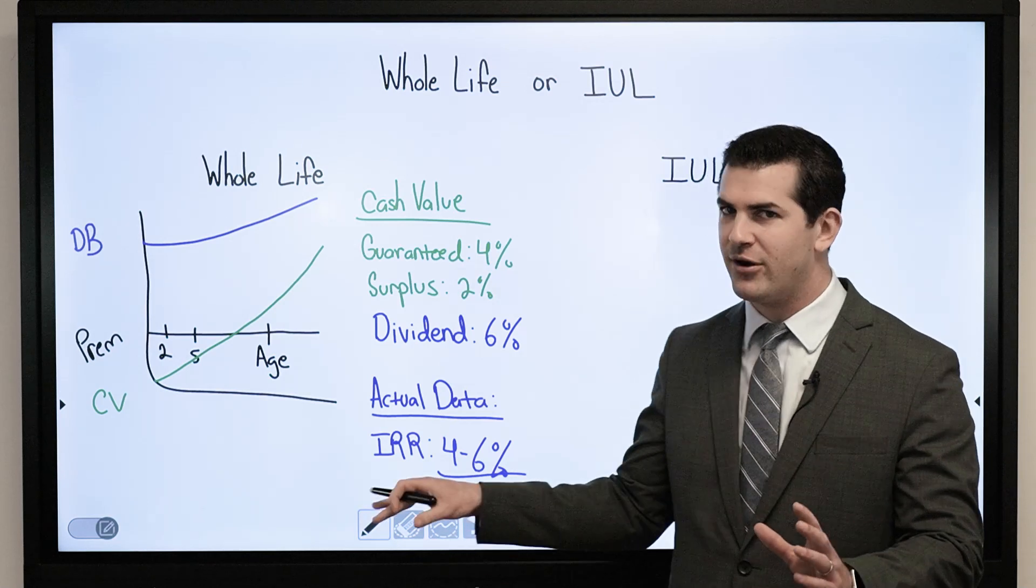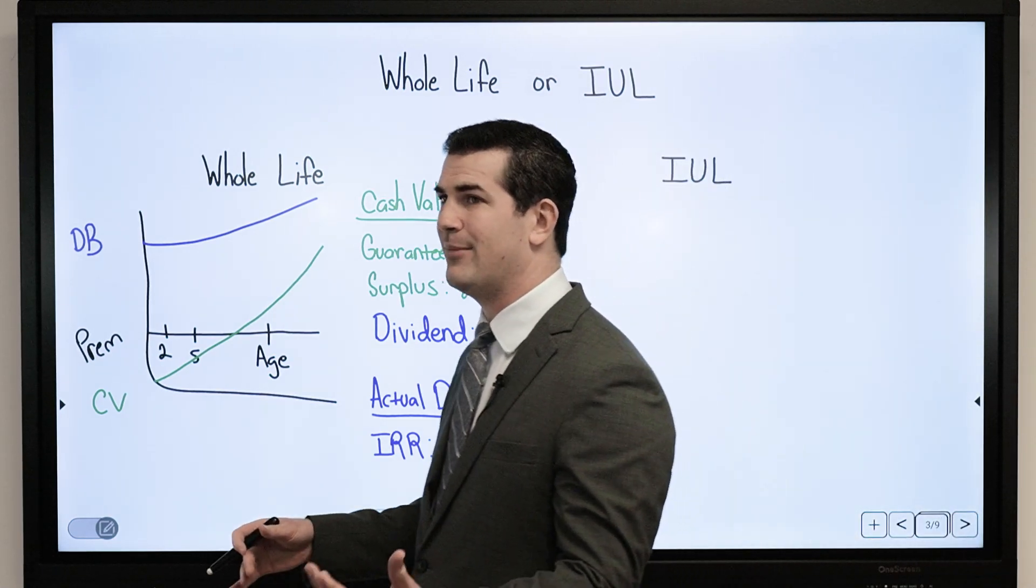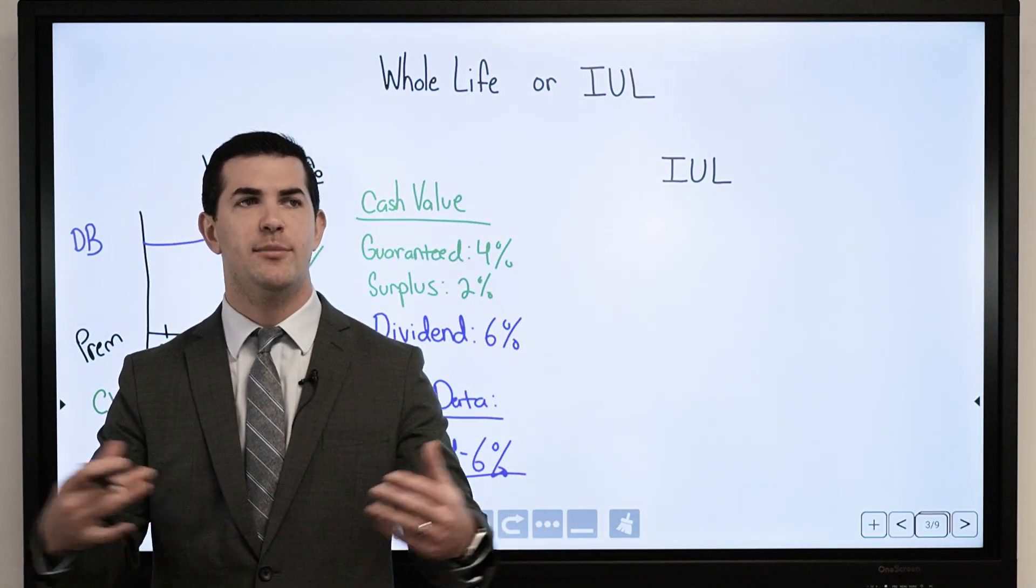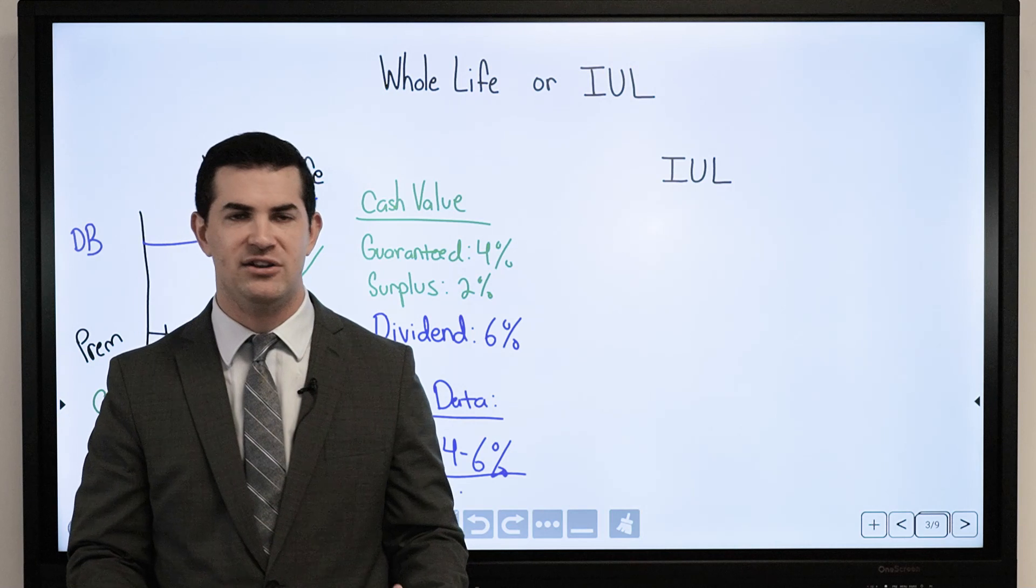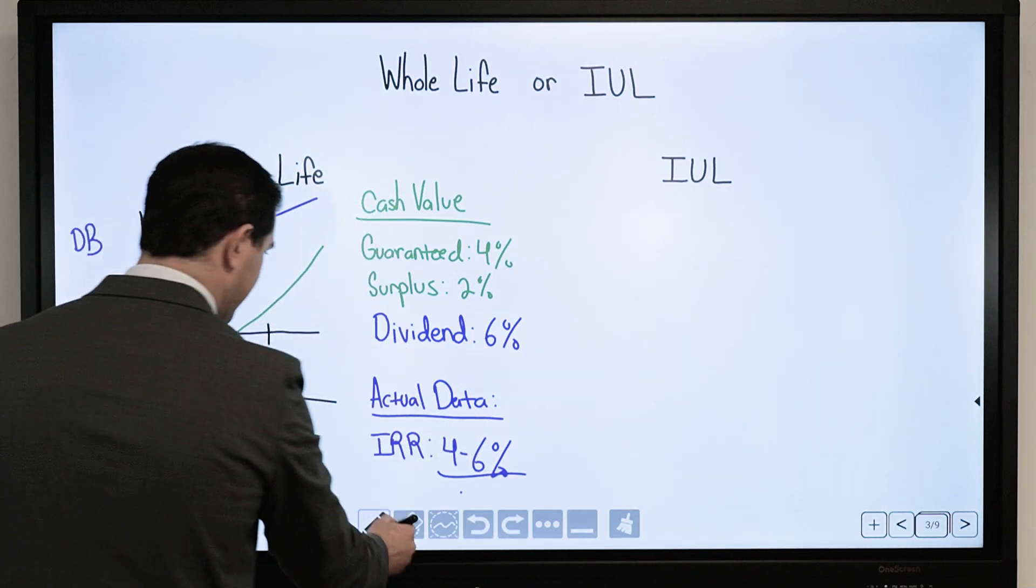Just to set expectations properly, the interest rate environment and dividends are much lower today than over the past 30 to 40 years. I would not bank on that 4% to 6%. Typically I say somewhere between 3.5% and 5.5%. Quick overview of whole life: fixed asset will go nowhere but up over time.